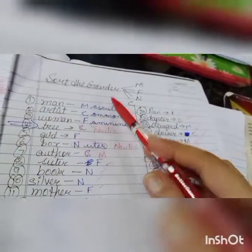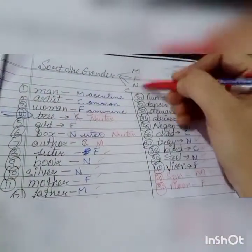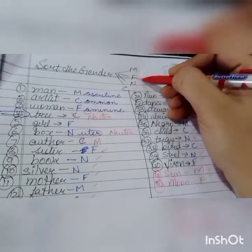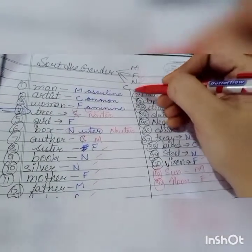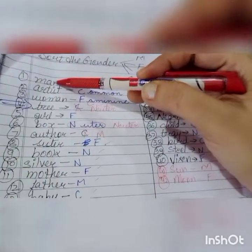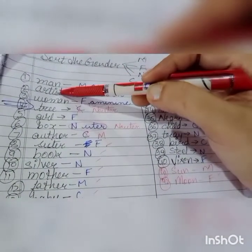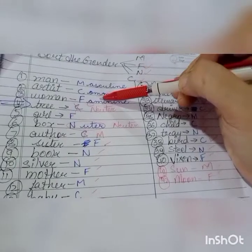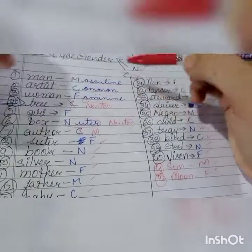Next is a gender sorting exercise. Sort words into: masculine gender, feminine gender, neuter gender, and common gender. Man → masculine. Artist → common gender. Woman → feminine.